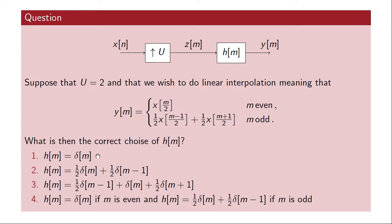Should H(M) be a delta function? An average of two shifted delta functions? A triangular structure given by shifted delta pulses weighted by different values? Or should H(M) equal a delta function for even M and an average for odd M? The correct answer is option number 3. Option 4 is not a valid impulse response since it cannot depend on M in that way. The triangular H(M) will spread each non-zero sample to neighboring samples with a factor of one half, filling the inserted zeros in Z(M) with the linearly interpolated values.